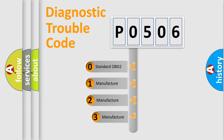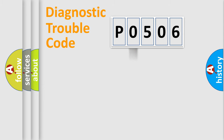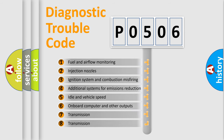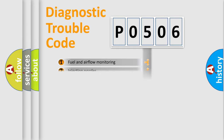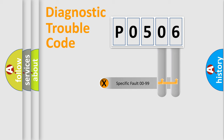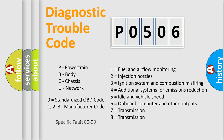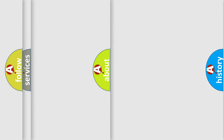If the second character is expressed as zero, it is a standardized error. In the case of numbers 1, 2, or 3, it is a more specific expression of a car-specific error. The third character specifies a subset of errors. Only the last two characters define the specific fault of the group. This division is valid only when the second character is zero.